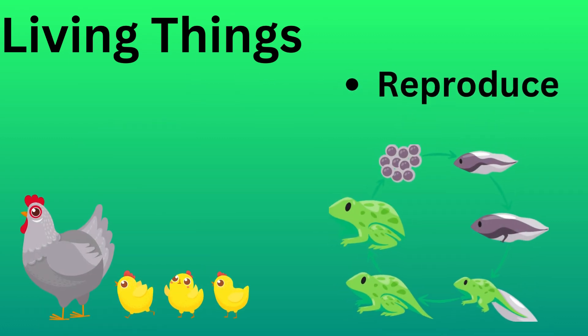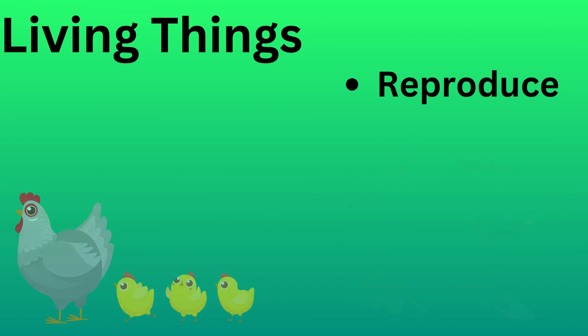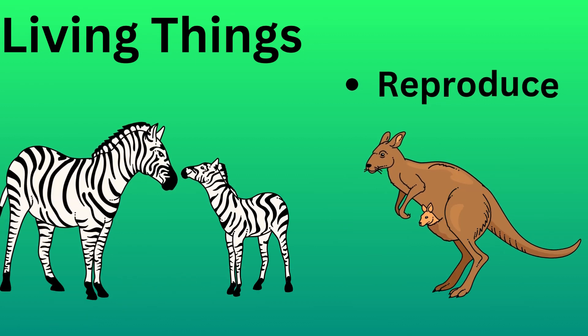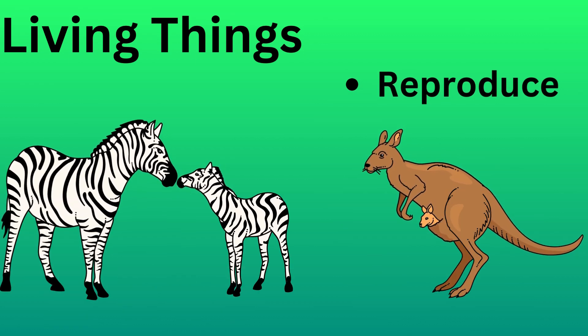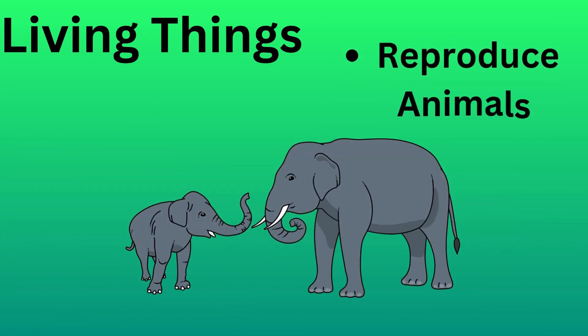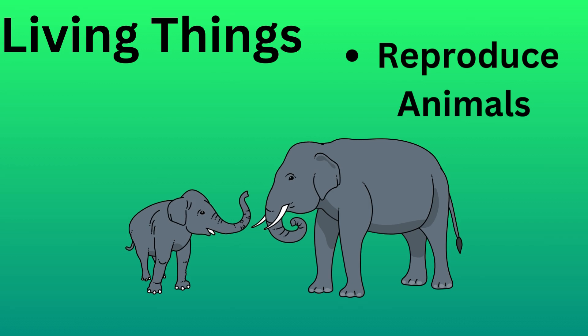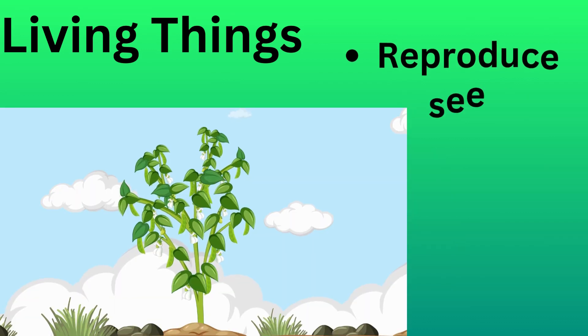Thirdly, living things can reproduce. This means they can produce new individuals. For example, animals have babies and plants produce seeds.